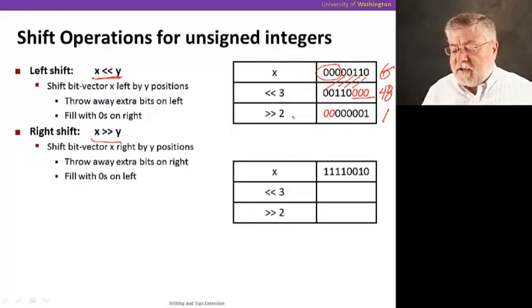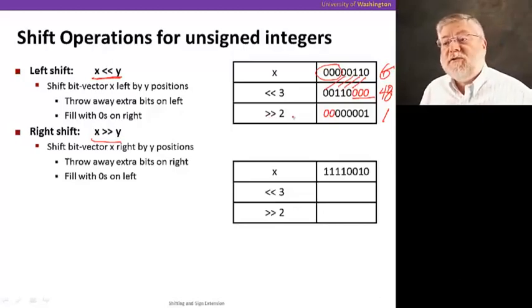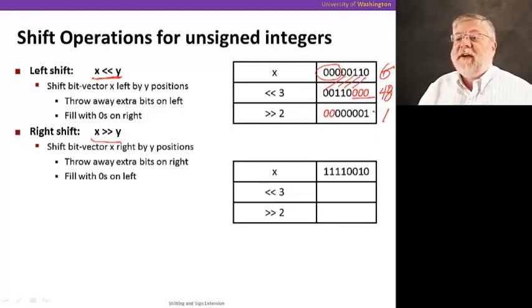Similarly, a shift to the right is a division operation. In this case, we took the six and divided it by two to two or four, and we got one as a result. You see, in fact, we probably wanted 1.5, but we can't represent fractional values. So it got rounded down to one.